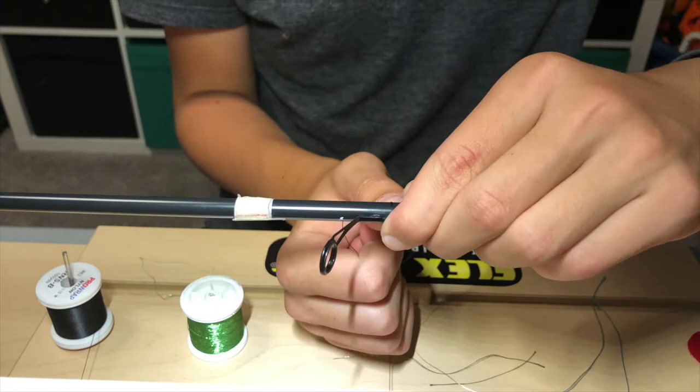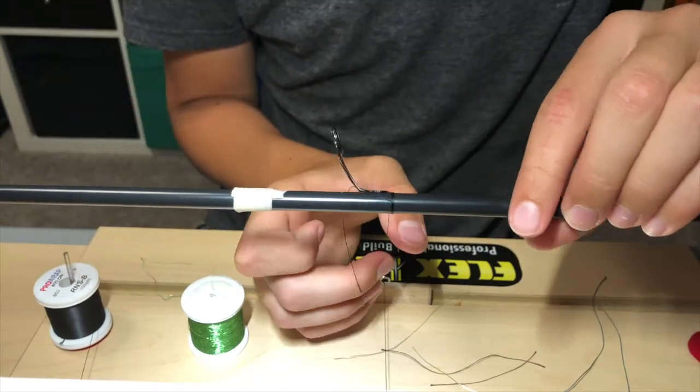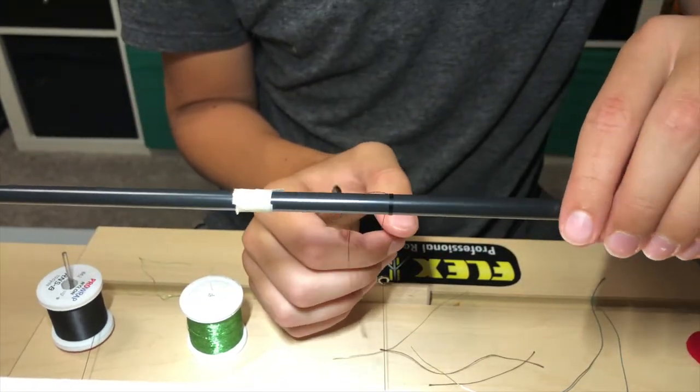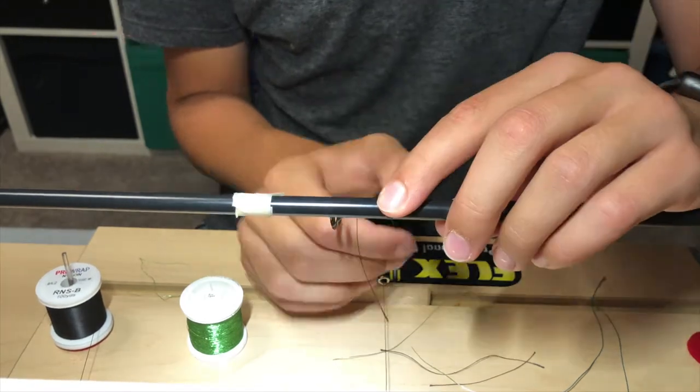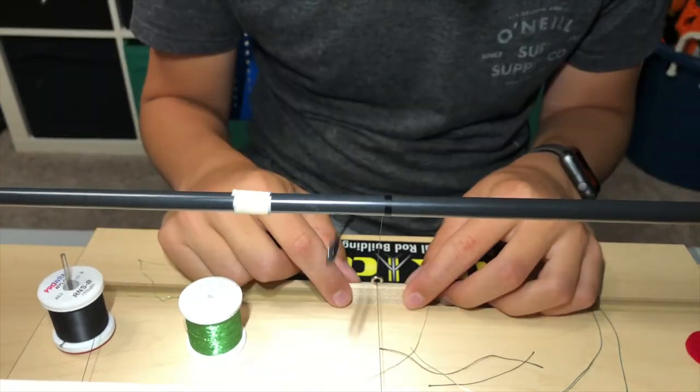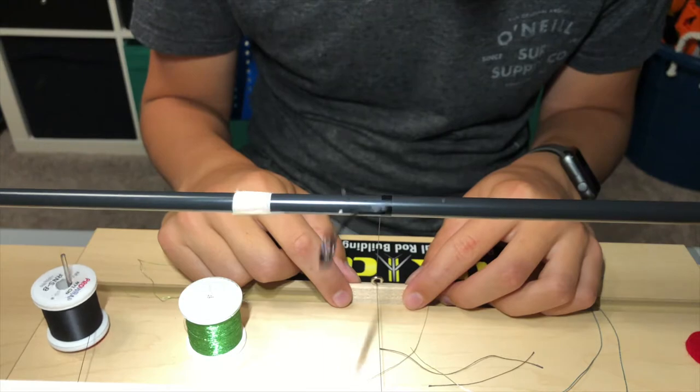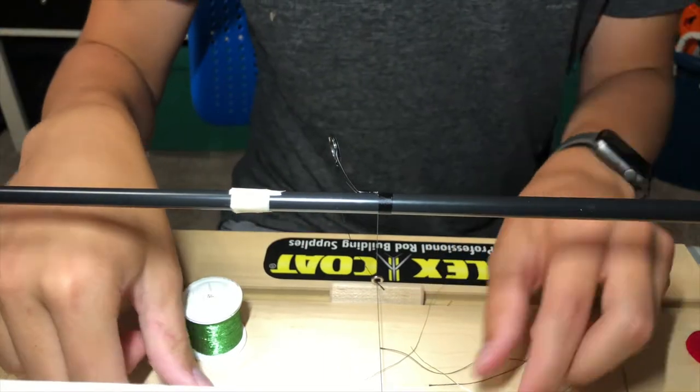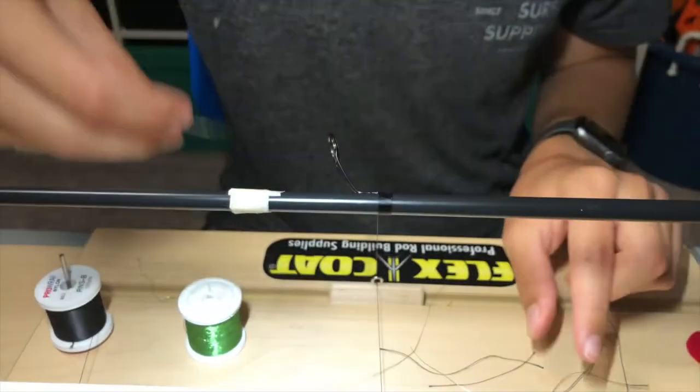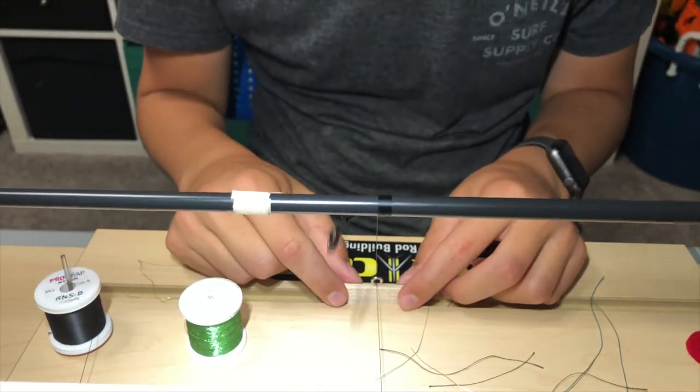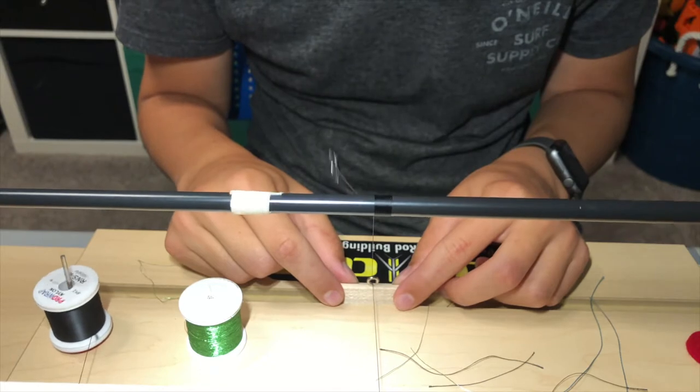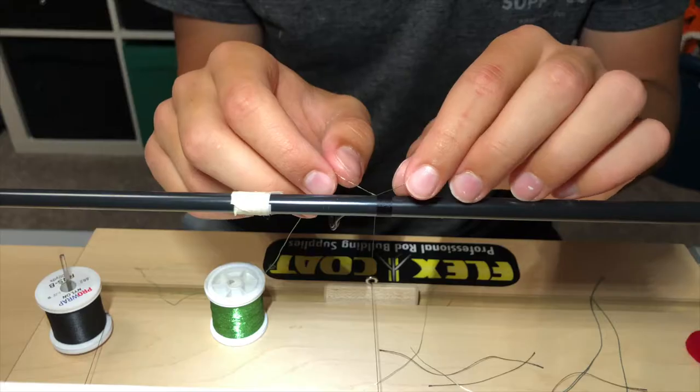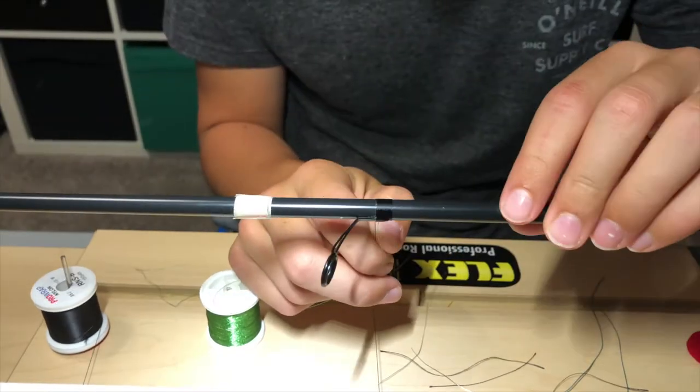Now we're starting that wrap again. Now I can start power wrapping. Before I go too far though I'm going to want to cut that tag end off.